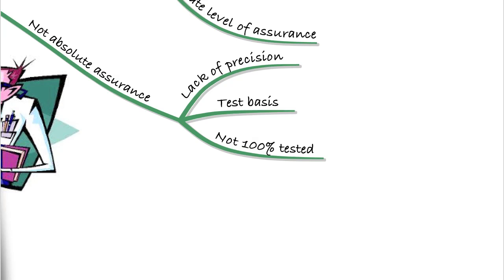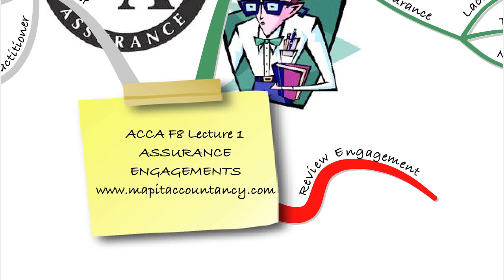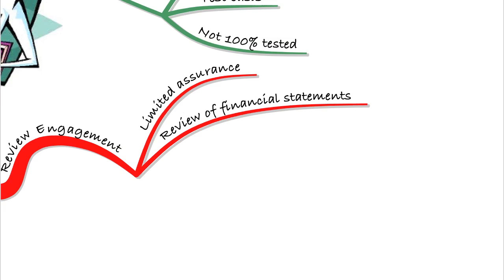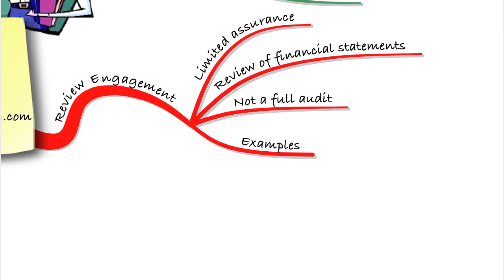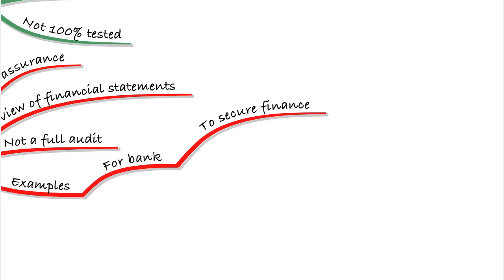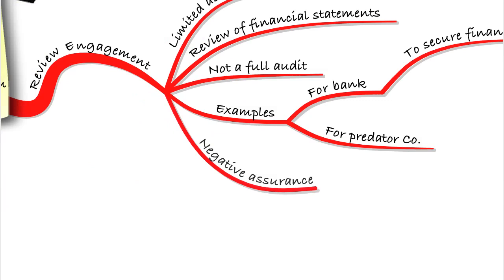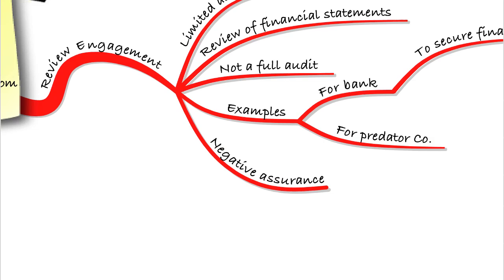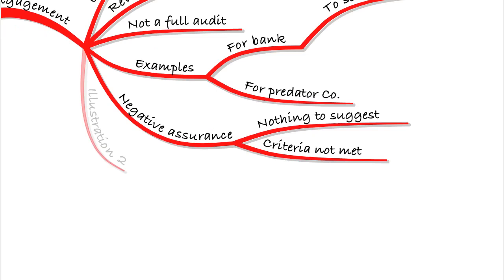A review engagement is an example of a limited assurance engagement. It's a review of the financial statements — not a full audit, so you don't carry out all of the testing. Examples would include work for a bank wanting to provide finance to a business, where they want you to look at the financial statements and say they look okay — there's nothing to suggest they're not correct. Or perhaps for a predator company, due diligence to make sure a business they're going to buy is fine. The assurance is negative: nothing to suggest the criteria haven't been met. See illustration two for exam application.